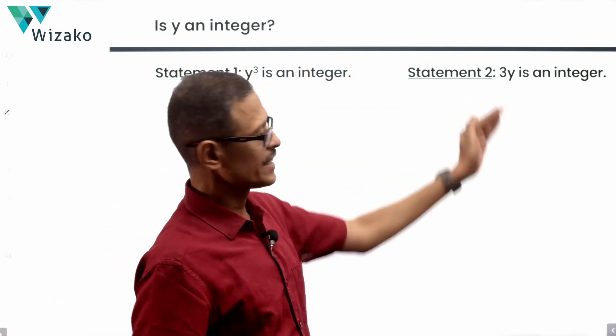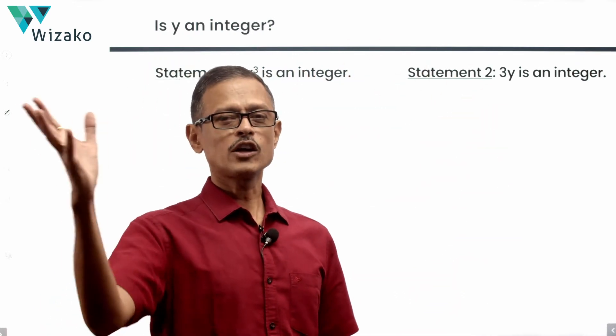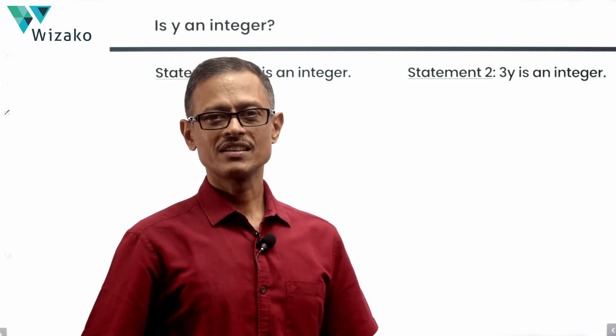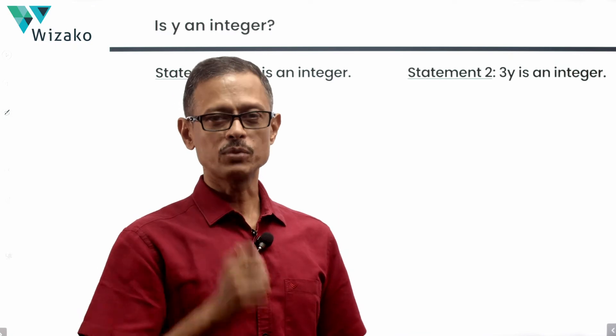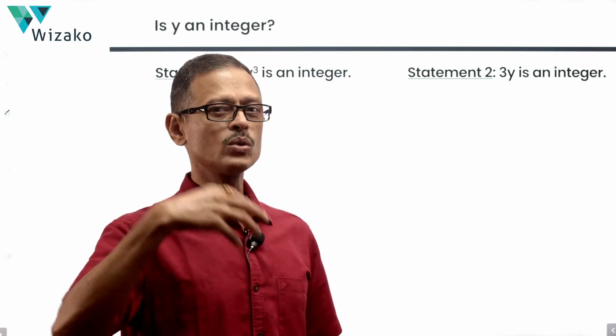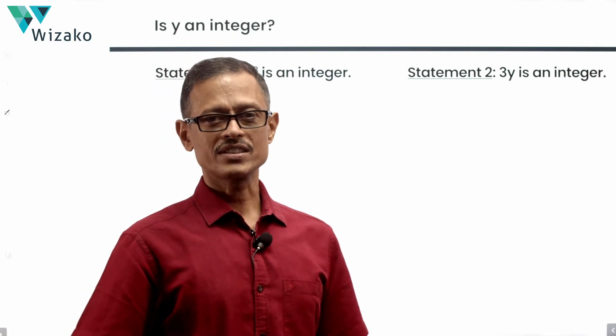I'm going to make a hypothesis and let's see whether that makes sense. If y cube has to be an integer and 3y also has to be an integer, that's not possible unless y is an integer. In a way, a grand hypothesis. How do I establish it? How do I prove it? I'm going to use a counter-argument, not a counter-example, counter-argument to basically come to this. Let's take a look at it.